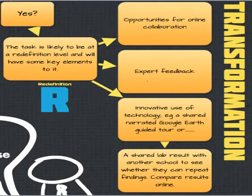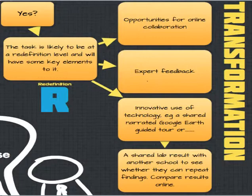Let's take a look at examples of transformative learning activities at a redefinition level. These activities could provide opportunities for online collaboration, expert feedback, innovative use of technology, and inter-school collaboration. For example, schools along the Mississippi River can share water testing results and photos of sceneries at various cities along the river to deepen student understanding of the river ecosystem.